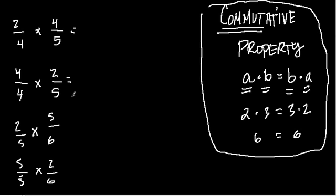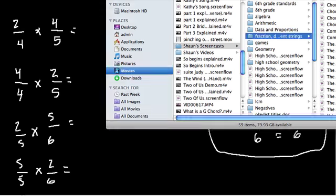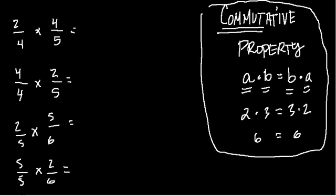So the first thing we'll do is we'll apply a standard algorithm to each of them, and then we'll kind of backtrack to talk about how we know the commutative property applies. So we have 2 times 4, which is 2 times 4 over 4 times 5. That gives us 8 over 20. I'm going to leave it in that form, not reduced yet.